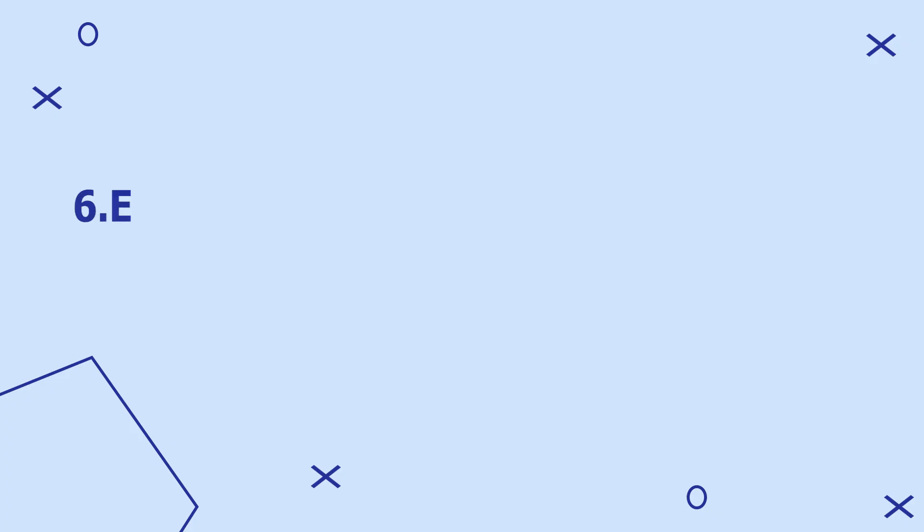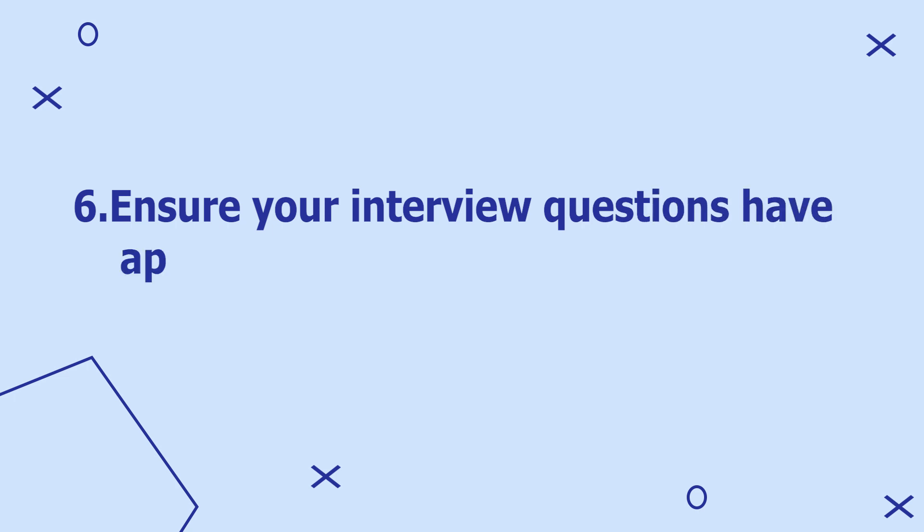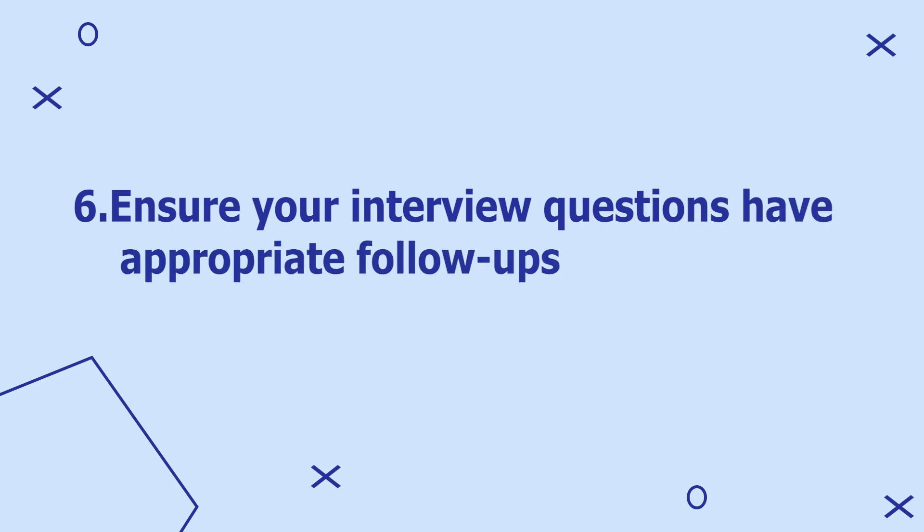Tip number six: ensure your interview questions have appropriate follow-ups and probes. For example: "can you give an example?", "tell me a story about that," or "how might you go about doing that?" So those are the six tips you can use to formulate the best interview questions for qualitative research.